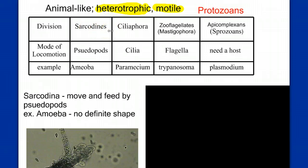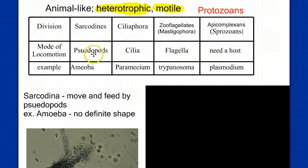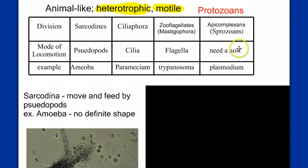We're going to look at four different groups of protozoans: the sarcodines, the ciliophora or ciliates, the zooflagellates or mastigophora, and the apicomplexans or sporozoans. Each group is differentiated by its mode of locomotion. Sarcodines move by pseudopods, ciliates move by cilia or little hairs, zooflagellates move by a flagella like a whip-like tail, and the sporozoans have difficulty moving and basically live their entire lives inside a host cell — they're typically parasitic.